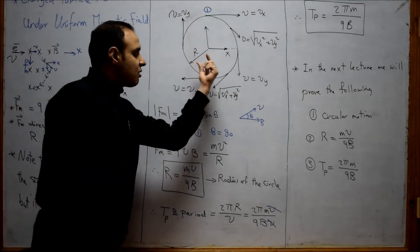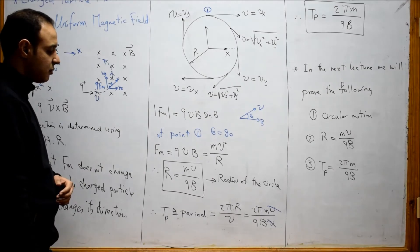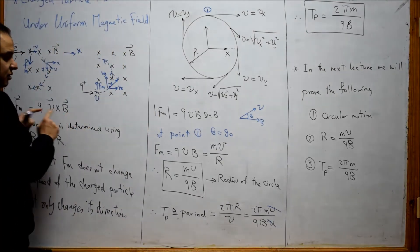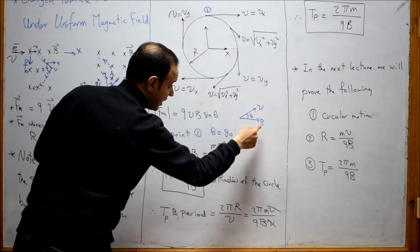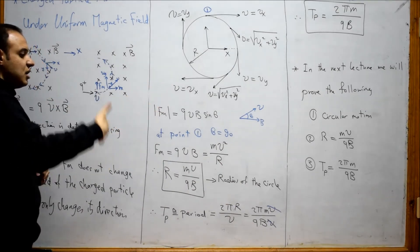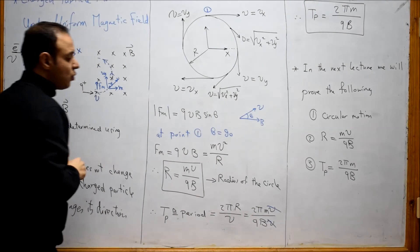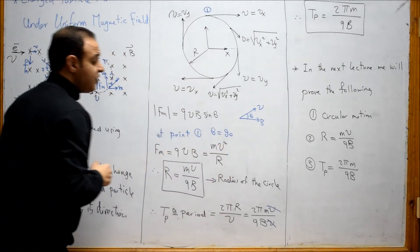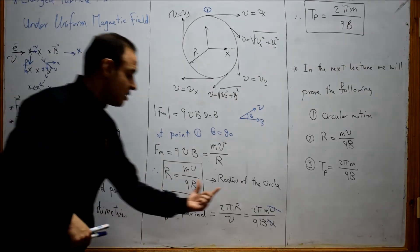Now let's determine the radius r and the time period of this circular motion. The magnetic force magnitude is F = qvB sin θ. Since the velocity is always perpendicular to B, θ equals 90 degrees and sin 90 = 1, so F = qvB. This force equals the centripetal force mv²/r. Equating these two terms gives us the radius: r = mv / qB.